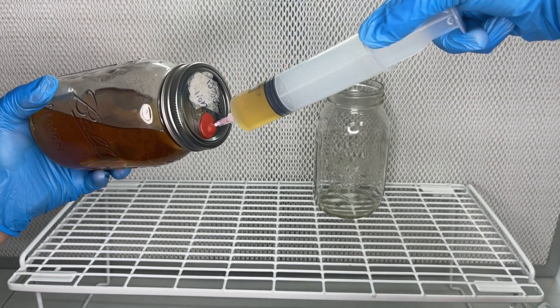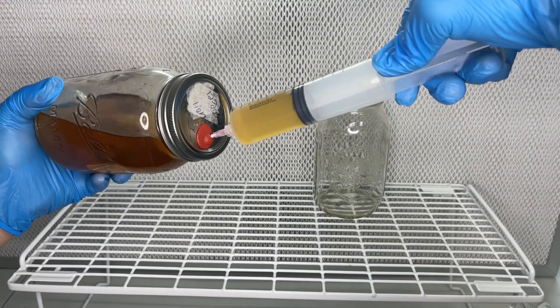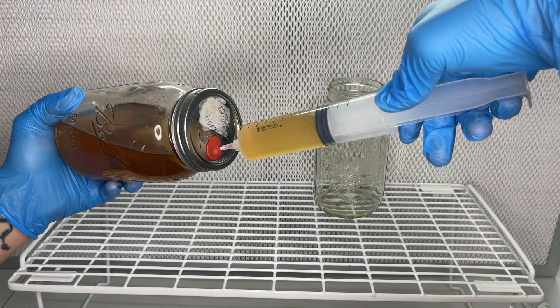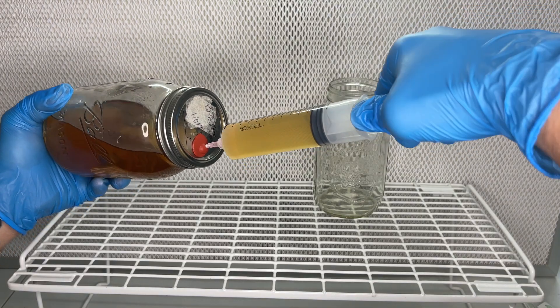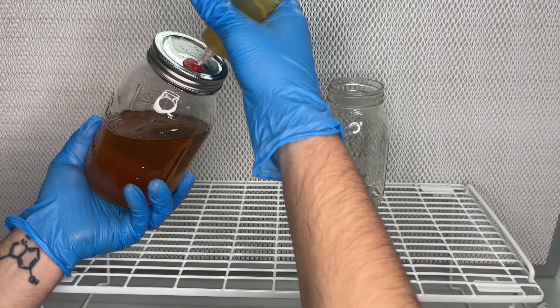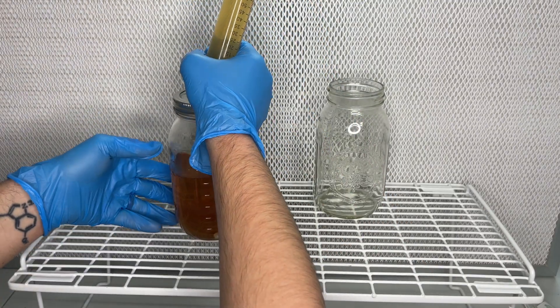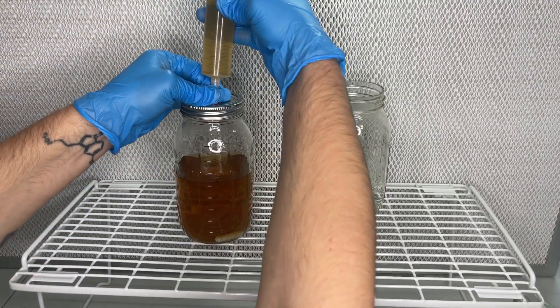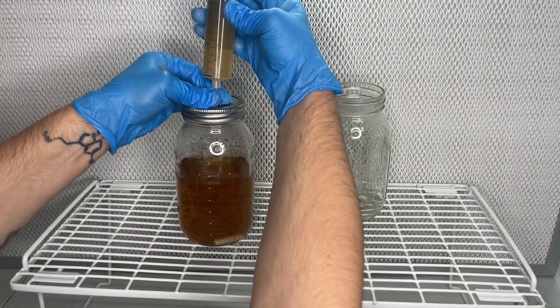These heavy duty 60ml syringes are hard to pull back, but it definitely beats extracting 10ml at a time. I usually only do 3-4 pulls, taking about 200-300ml out of the jar, and it only takes me a few minutes.